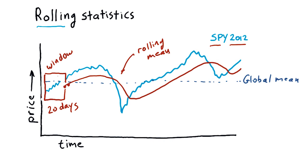In a lesson in the next mini-course, we're going to spend a lot of time talking about technical indicators. This is actually one of them, this rolling mean. It's called by technical analysts a simple moving average.